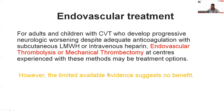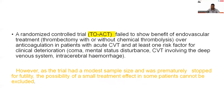Regarding endovascular treatment: for adults and children with CVT who develop progressive neurological worsening despite adequate anticoagulation with low molecular weight heparin or intravenous heparin, endovascular thrombolysis or mechanical thrombectomy at experienced centers may be treatment options. However, limited available evidence suggests no benefit. A randomized controlled trial failed to show the benefit of endovascular treatment — thrombectomy with or without chemical thrombolysis — over anticoagulation in patients with acute CVT.